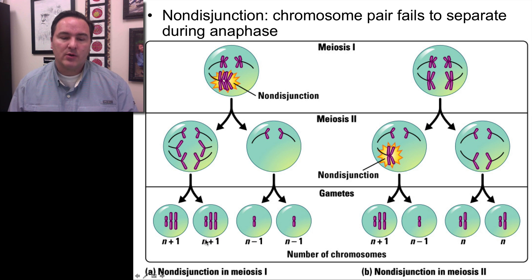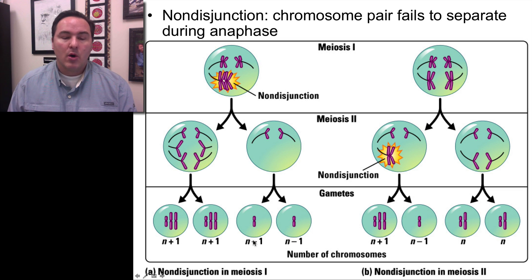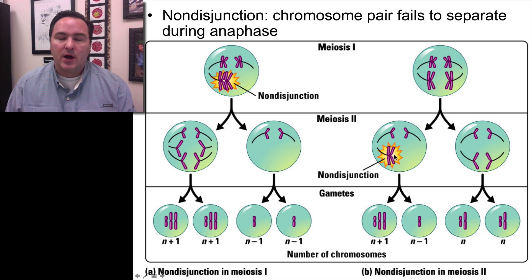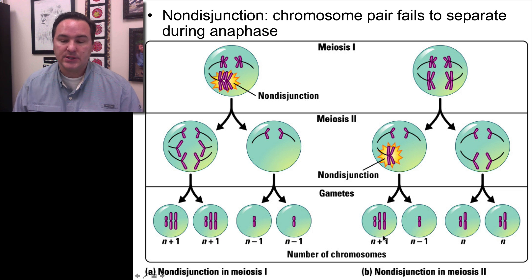You eventually follow this through down into the gametes, and you get an N+1 — a haploid plus 1 — or a haploid minus 1. This can also happen in meiosis II, where you have non-disjunction of the sister chromatids. In that case, half of the gametes would still be okay, but the other half are going to be in the N+1 or N-1 condition.